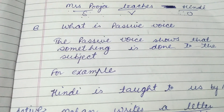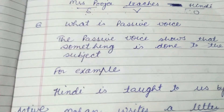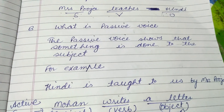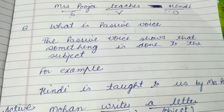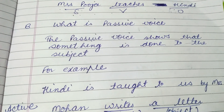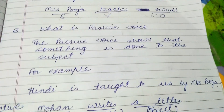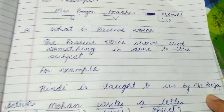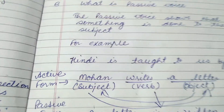In passive voice, we always use the third form of the verb, and after that we use 'by', and then the subject comes at the place of object. See — Mrs. Pooja now comes at the end, at the place of object.